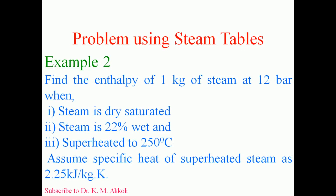I will solve here another problem on steam properties using steam tables, that is example 2. Find the enthalpy of 1 kg of steam at 12 bar when: first case, steam is dry saturated; second case, steam is 22% wet; and third case, superheated to a temperature of 250 degree Celsius.